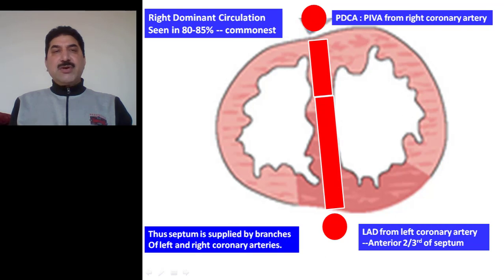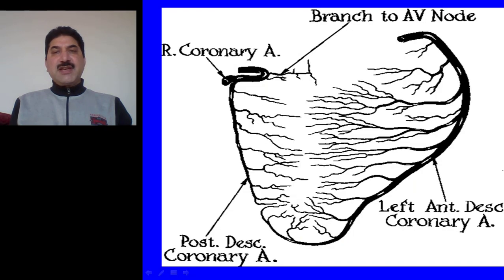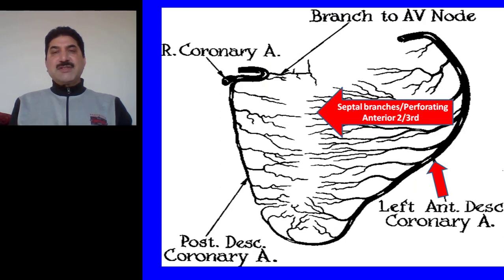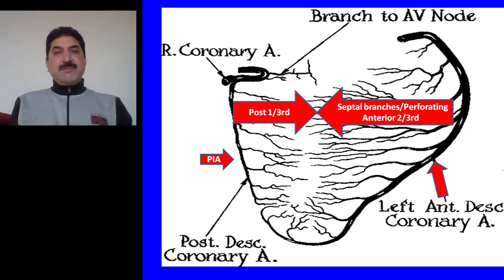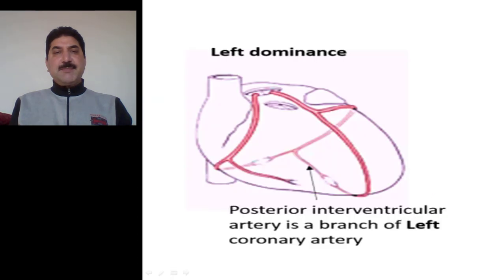Thus, in right dominant coronary circulation, the septum is supplied by branches of both the left and right coronary arteries. As shown in this diagram, from the left anterior descending coronary artery there are perforating branches that supply the anterior two thirds of the interventricular septum. The dominant coronary artery in this case arises from the right coronary artery and gives septal branches that supply the posterior one third of the septum.